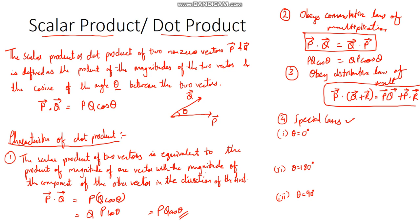Now we have three special cases. The first case is when theta equals 0. In that case, p dot q = pq cos 0 = pq times 1 = pq. From this, we can also write that i dot i = j dot j = k dot k. Since the angle between them is 0 and they are unit vectors with magnitude 1, all of these equal 1.